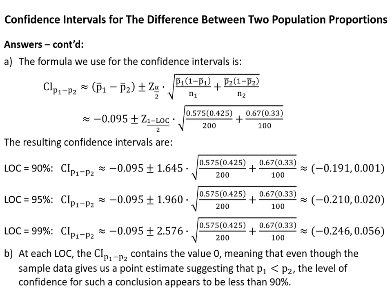For part B, at each level of confidence the CI P1 minus P2 contains the value 0 — each interval starts at a negative value and ends at a positive value. This means that even though the sample data gives a point estimate suggesting that P1 is less than P2, the level of confidence for such a conclusion appears to be less than 90%.